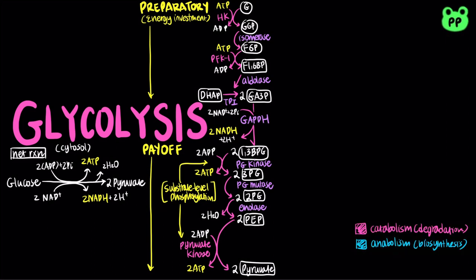Note that all the irreversible steps are written in pink, symbolizing catabolism or the breaking down of molecules, and all the reversible steps are written in purple.